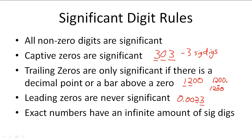The last rule is that exact numbers have an infinite amount of significant digits. So if I have exactly two of something, it has an infinite number of significant digits. This is important when doing calculations — understanding what is an exact number helps ensure you accurately work with significant digits.